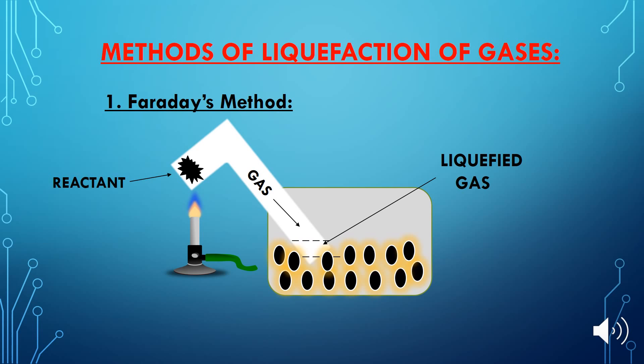Some important methods for liquefaction of gases are: Number one, Faraday's method. In this method, cooling is produced by using a freezing mixture of ice and various salts. Gases like sulfur dioxide, carbon dioxide, and chlorine can be liquefied by this method under their own pressure.